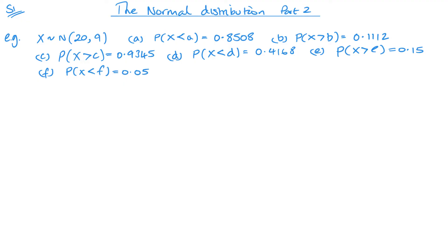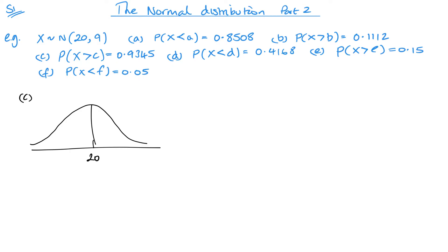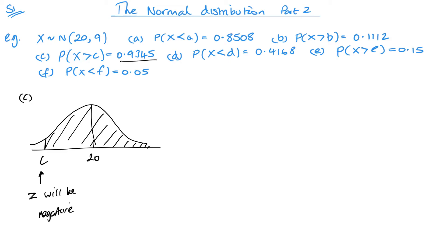Moving on — I've taken the original c and d and put them last as e and f, and I've added in two more just to make sure I cover every scenario you could be faced with. For our new version of c, we have the mean 20 in the middle and this time P(X > c) = 0.9345, so c has to be somewhere to the left with a big area — bigger than a half. That means z will be negative, as it's to the left of zero. Let's start by thinking of its mirror image.